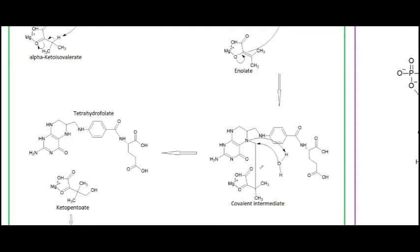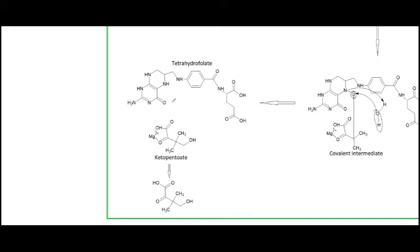The electrons from the enolate oxygen collapse back down, and those double-bond electrons attack the methylene carbon on the folate, which has a partial positive charge from resonance with its nitrogen. This forms a covalent intermediate with our alpha keto isovalerate. Then water attacks that carbon while the nitrogen's lone pair deprotonates the water, releasing the folate and leaving us with our keto pantoate — now with an added carbon and hydroxyl group.